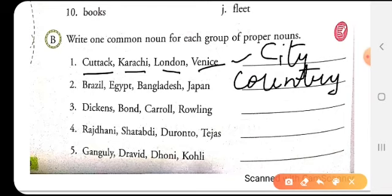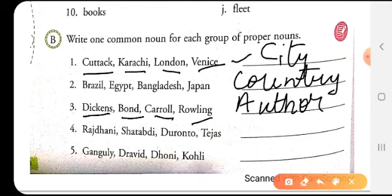Then we have the names Dickens, Bond, Carroll, Rowling. They are authors or writers. So you can write here A-U-T-H-O-R, author.